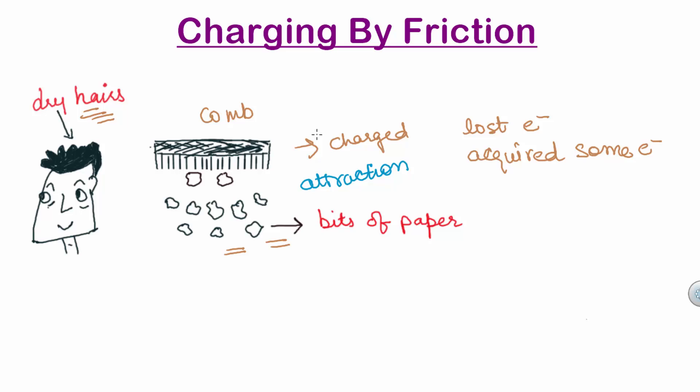Many such solid materials are known which on rubbing attract light objects like light feather, bits of paper, light straws, etc.